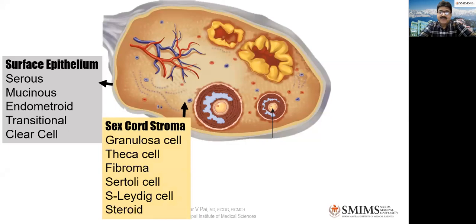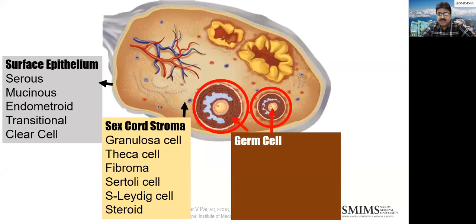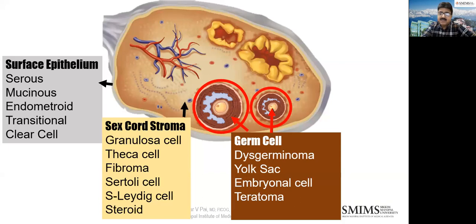I used to ask undergraduates: which is the germ cell in the ovary? And no one would answer. Obviously, it is the ovum. Germ cell is nothing but the ovum. When the ovum decides to become malignant, if it takes the line of becoming the embryo, you have embryonal type cancers — embryonal cell cancer being the most virulent. If it decides to go extra-embryonal, then you can have dysgerminomas, teratomas, yolk sac tumors, embryonal cell carcinomas, and choriocarcinoma.